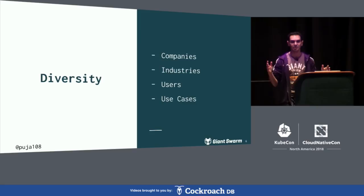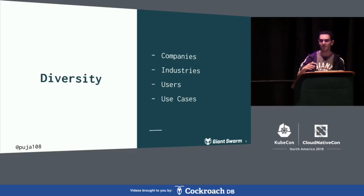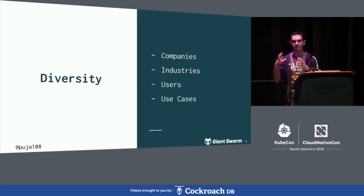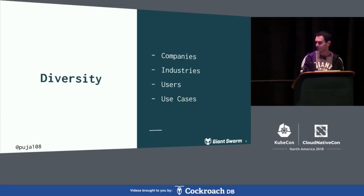There's a lot of diversity in these clusters because they run for different companies. These companies come from different industries — from insurance to banking to retail. Inside these companies, there are different kinds of users: the end-user developer who writes code, admins, architects. And then there are different use cases: IoT, machine learning, big e-commerce use cases.